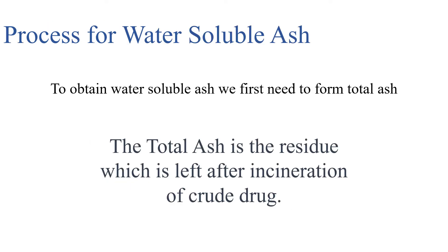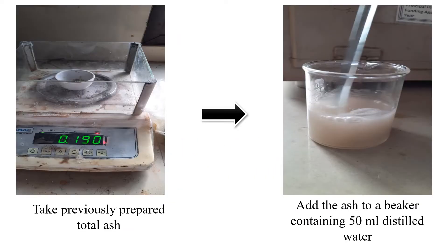Process for Water-Soluble Ash: To obtain water-soluble ash, we first need to form total ash. The total ash is the residue which is left after incineration of the crude drug. Here are the steps to form water-soluble ash. Firstly, take previously prepared total ash and add this ash to the beaker containing 50 ml of distilled water.